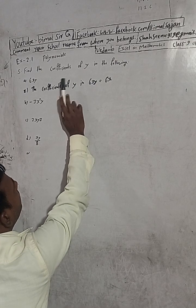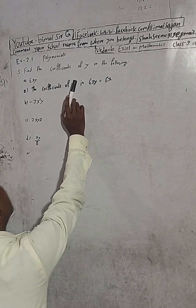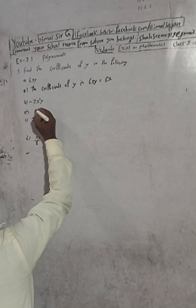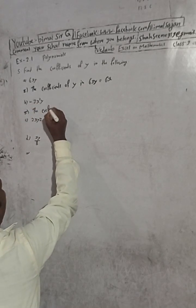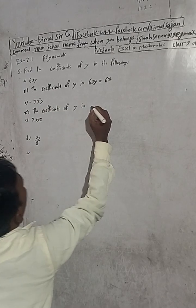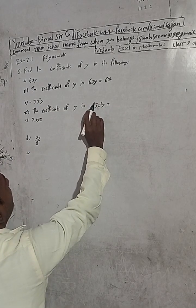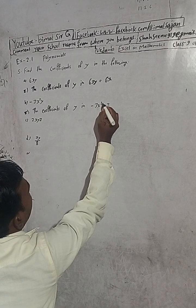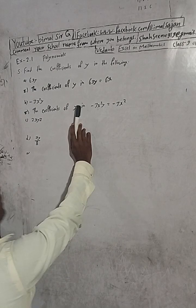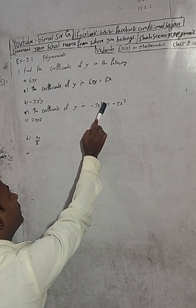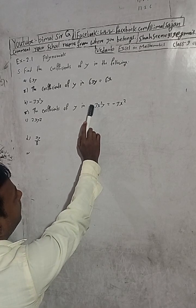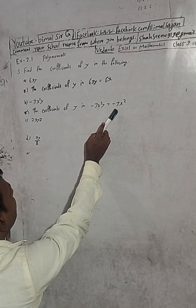Next, the coefficient of y in minus 3x²y. Except this y, what are the remaining terms? It is minus 3x². So minus 3x² is the coefficient of y.